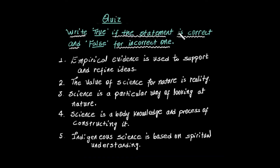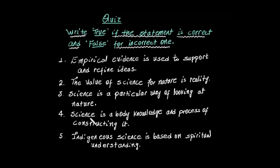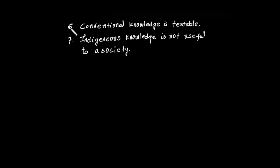Write true if the statement is correct and false if incorrect. Question 1: Empirical evidence is used to support and refine ideas. Question 2: The values of science for nature is reality. Question 3: Science is a particular way of looking at nature. Question 4: Science is a body of knowledge and process of constructing it. Question 5: Indigenous science is based on spiritual understanding. Question 6: Conventional knowledge is testable. Question 7: Indigenous knowledge is not useful to a society.